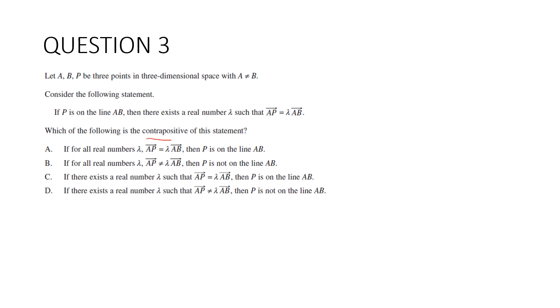Remember with contrapositive, we want to switch these around and negate both of them. The negation of 'there exists' is 'for all'. For all real numbers λ, AP, we want the negation, will not equal λAB. And that will imply the negation of this: P is not on the line. If for all real numbers AP is not equal to λAB, P is not on the line. It's B.